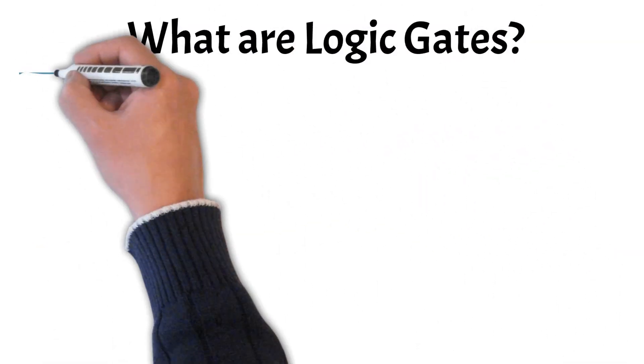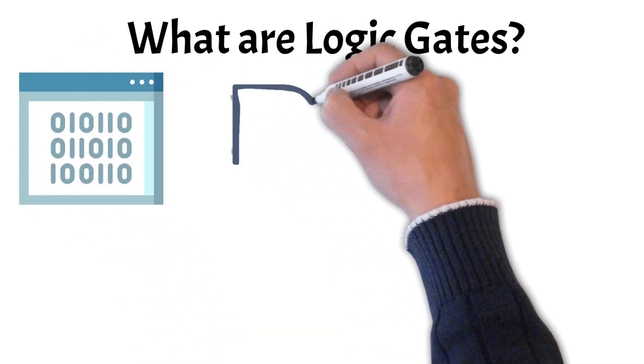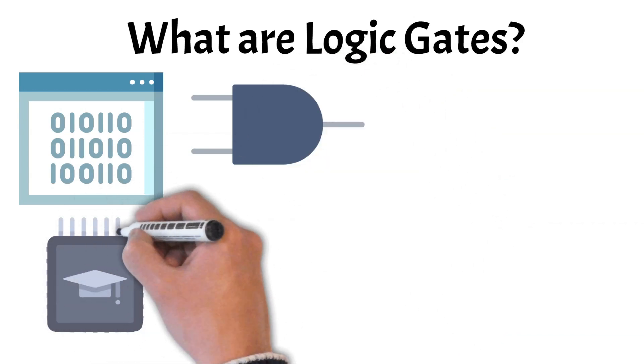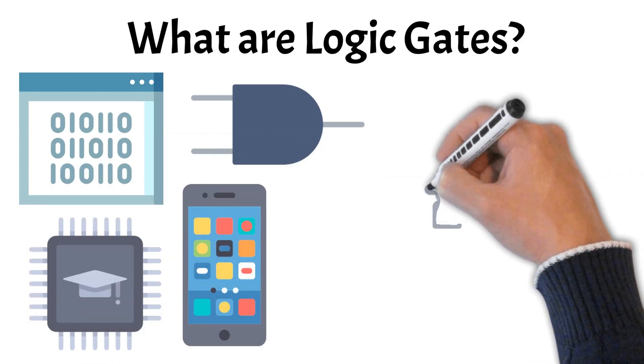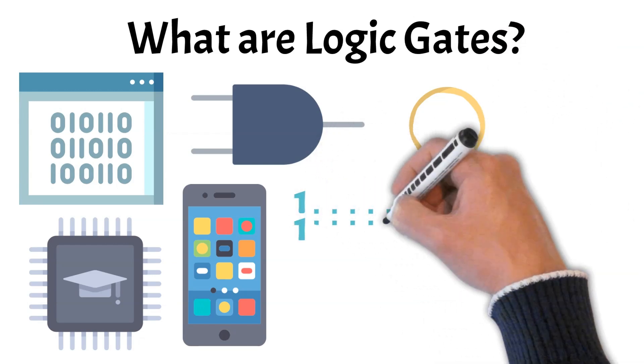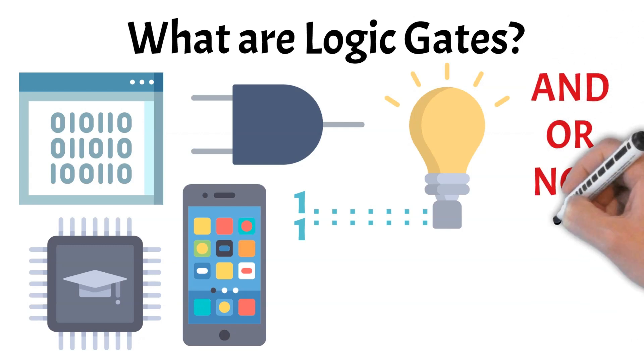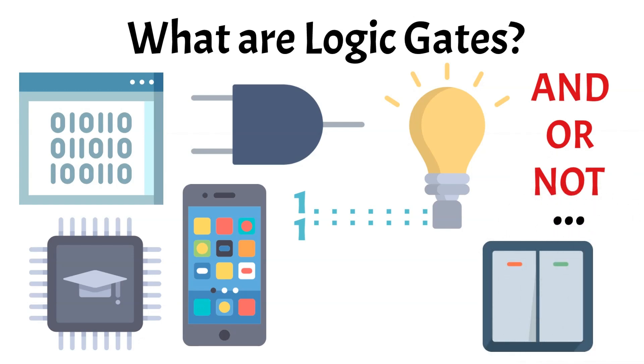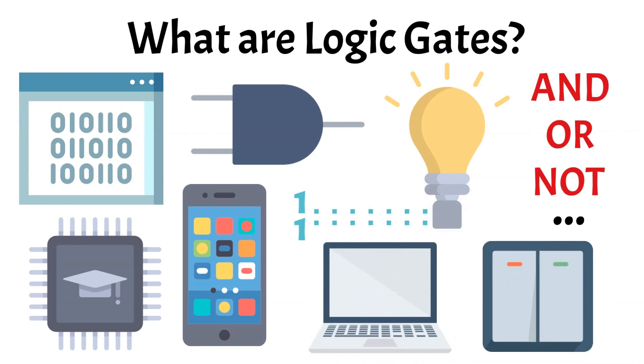You've probably heard that digital devices run on ones and zeros. But how do those bits actually do anything useful? That's where logic gates come in. They're the fundamental components inside digital circuits, used in everything from microprocessors and memory chips to calculators and smartphones. A logic gate takes one or more binary inputs and produces a single output based on a specific logical rule. Each gate type, like AND, OR, or NOT, follows a different rule, allowing devices to make simple decisions and perform operations. By combining many gates, complex tasks like math, comparisons, and data processing become possible, making logic gates essential to modern computing.